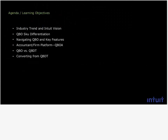The agenda: we'll go through key industry trend info and Intuit's vision, which is mostly cloud, internet, or mobile. Then we'll cover QuickBooks Online version differentiation — there are three different versions. We'll look at key things important to the workflow and relate them to what you're used to in desktop — QuickBooks Online Plus versus Essentials. That will be in PowerPoint. I'll come back to PowerPoint for the last subject, converting from QuickBooks Desktop. The rest of the time we'll be live in QuickBooks Online and QuickBooks Online Accountant.